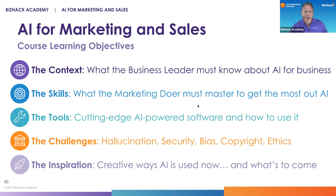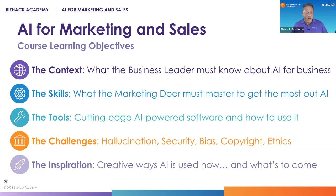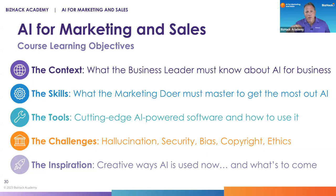This course has five learning objectives. Number one, we want to give you the context — what should a business owner know about AI to be able to run her business? Number two, skills — what does the marketing doer, the person actually doing the ground-level work, need to master in order to get the most out of AI?